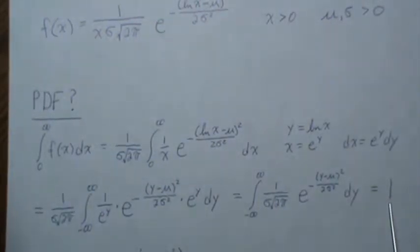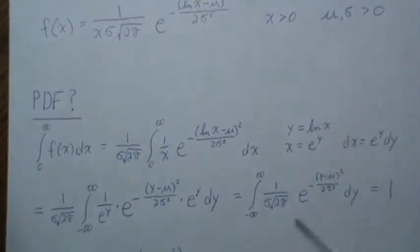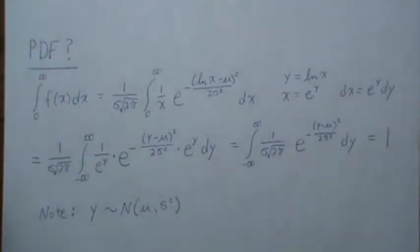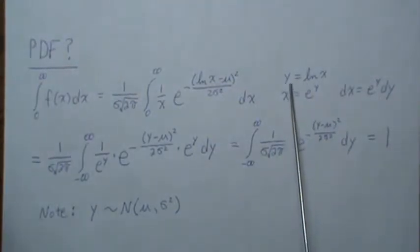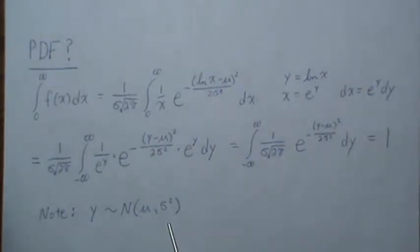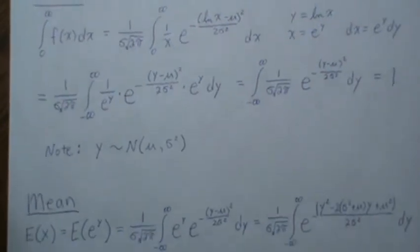So another thing is the limits here. When we plug in zero, actually we can't plug in zero, but as it approaches zero, this goes to negative infinity and when we put in positive infinity that goes to positive infinity. And another note that we're going to make use of is that once we transform this to Y, it becomes a normal distribution with mean mu and variance sigma squared. And so we're going to make use of that in our derivations of the mean below.